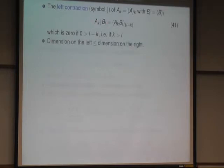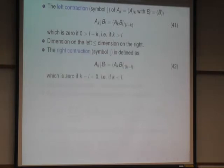So always K on the left and L on the right here. As we mentioned, the dimension on the left will always be less or equal to the dimension on the right. And the right contraction is the opposite. So it's analogical, but instead of taking the L minus K part, we take the K minus L part, and this is zero if K is less or equal to zero.